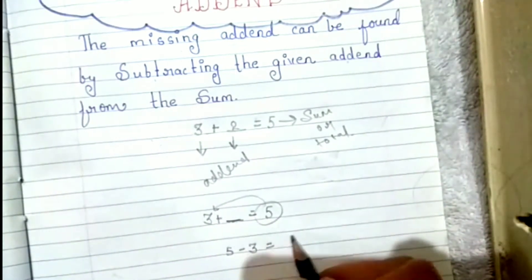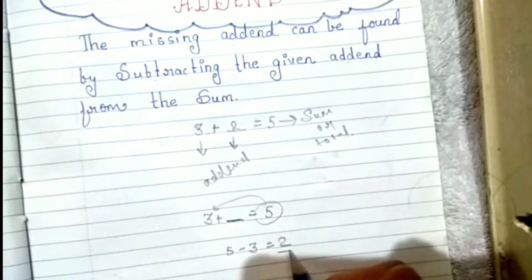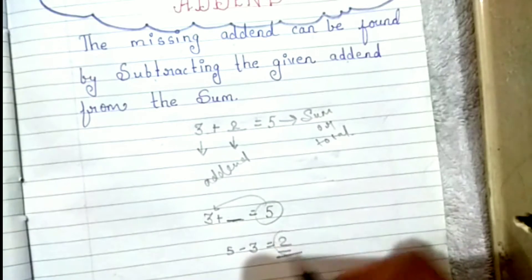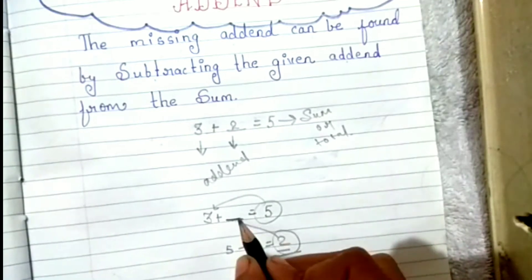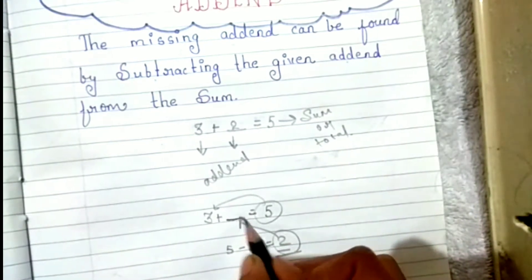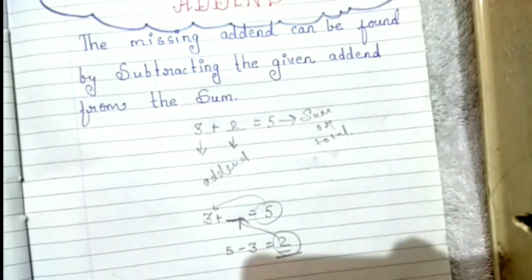That means 5 minus 3 equal to 2. तो आपका यहाँ जो missing addend है, वो 2 हो जाएगा।